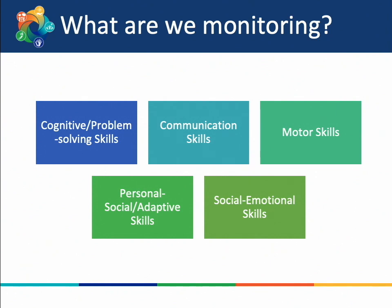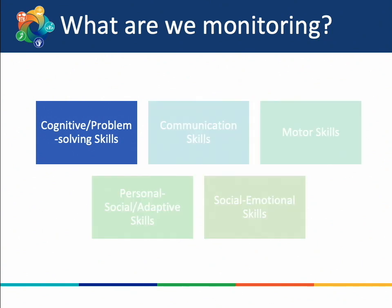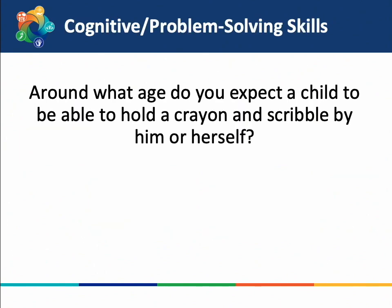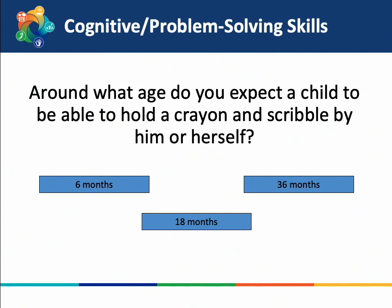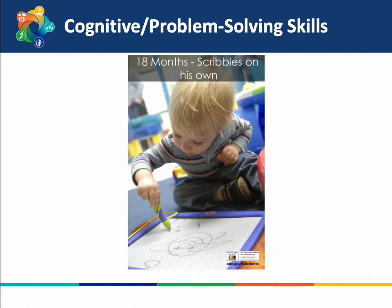When we complete a screening tool, it also assesses these five areas of development. We are going to discuss these areas throughout the presentation and engage in a game to guess at what age we might expect certain tasks. Starting with cognitive problem-solving skills — how a child thinks and solves problems — around what age do you expect a child to hold a crayon and scribble by themselves? The options are 6 months, 18 months, and 36 months. The answer is 18 months, as we can see with this little 18-month-old boy scribbling on the floor.